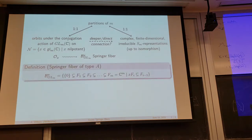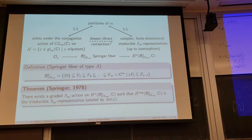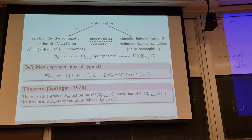In the last step, you want to get an irreducible representation. How do you get a vector space from a variety? Well, one thing you could do is take singular cohomology with complex coefficients, which gives you a complex vector space. The result due to Springer is that there does exist an action of the symmetric group on this cohomology ring. If you look at the top non-vanishing cohomology degree, this is actually the irreducible representation labeled by the Jordan type of your operator.